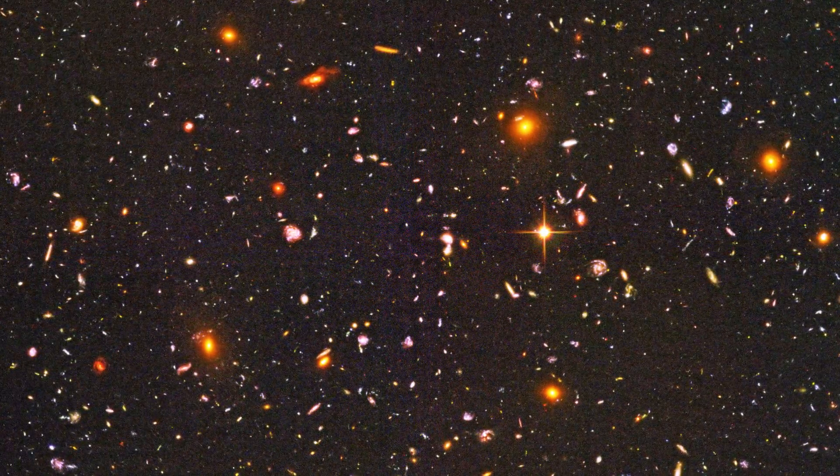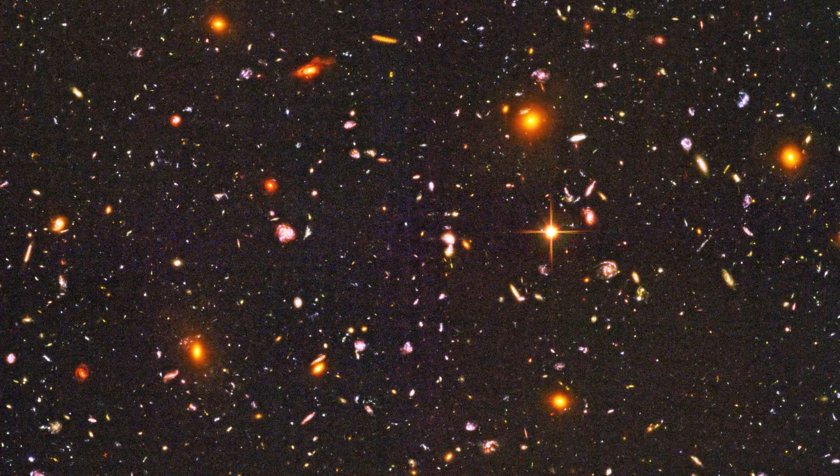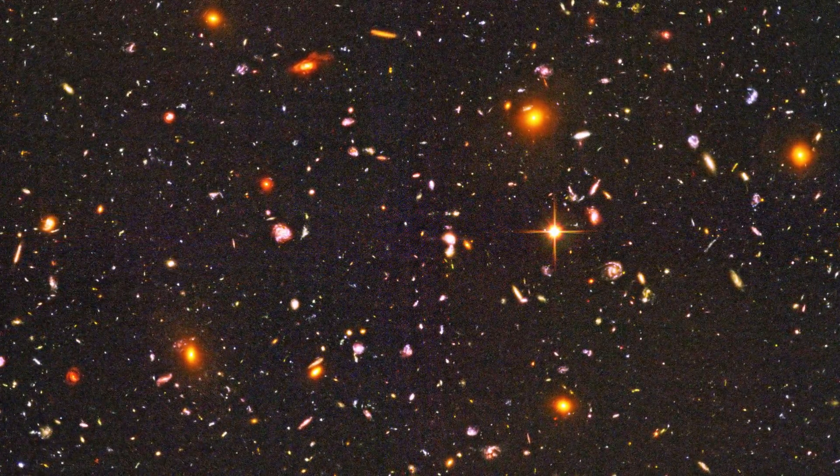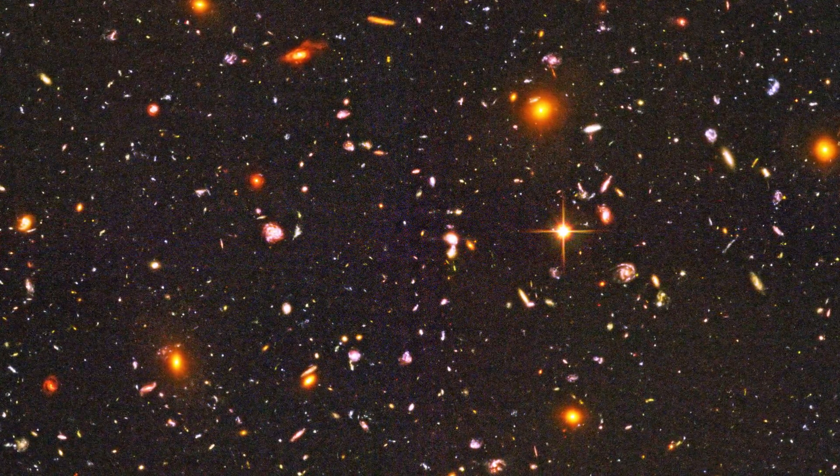Now if we look back in time as we look out into space, we should expect to find that distant galaxies look young as we are seeing them as they looked in the distant past when they in fact were young. And guess what? Distant galaxies look young. So Lyle is actually advocating adding unnecessary complexity in order to get less explanatory and predictive power.